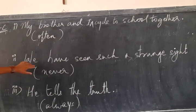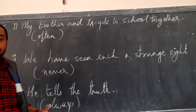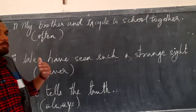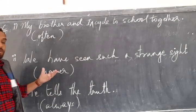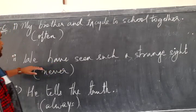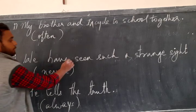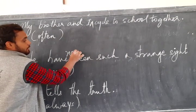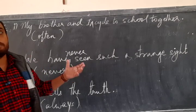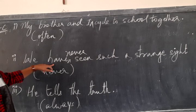Question number two. We have seen such a strange sight. We have seen adverb of perception. Whenever we see a perception, we use it with the verb. We have never seen such a strange sight. When the object is longer, we generally use it with the helping verb. That is have.